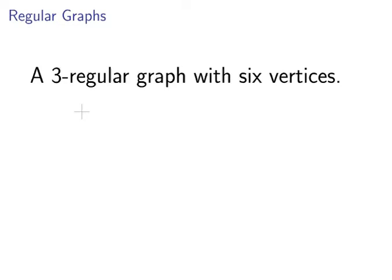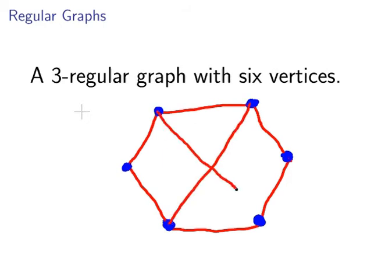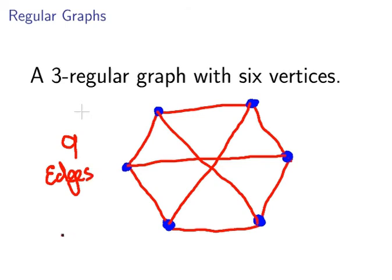So let's draw a three-regular graph on six vertices. We start off by drawing our vertices in a little hexagon shape. What we have now is a two-regular graph on six vertices. To get a three-regular graph, I join two more vertices together — that one to there, that one to there, and that one over there.